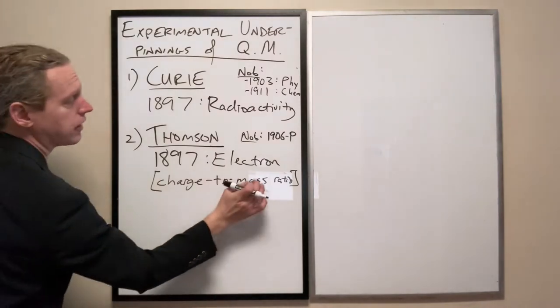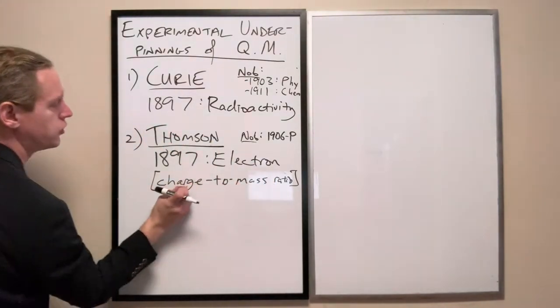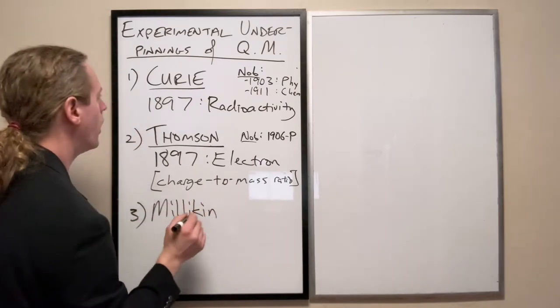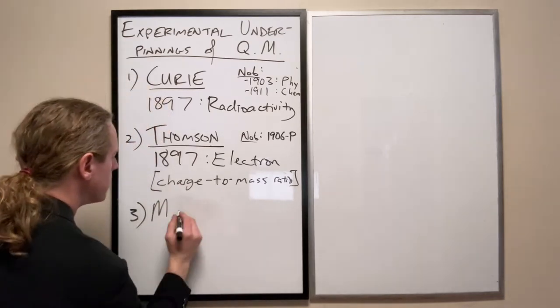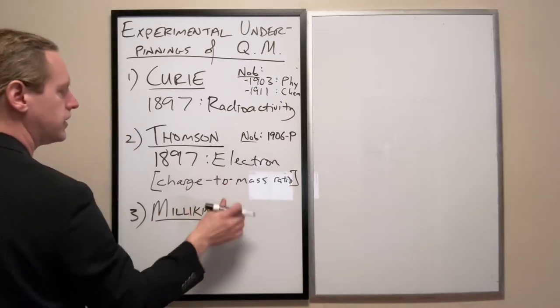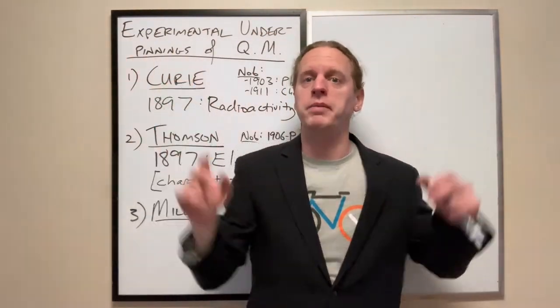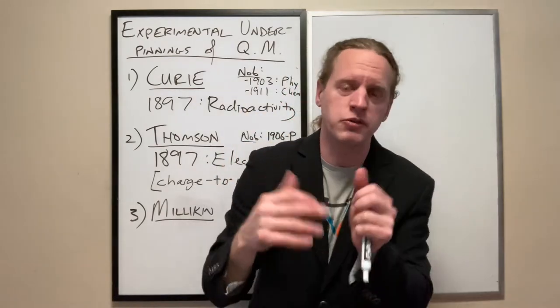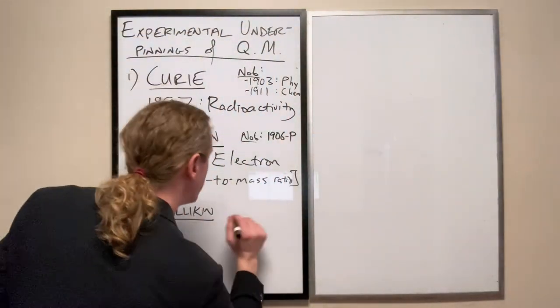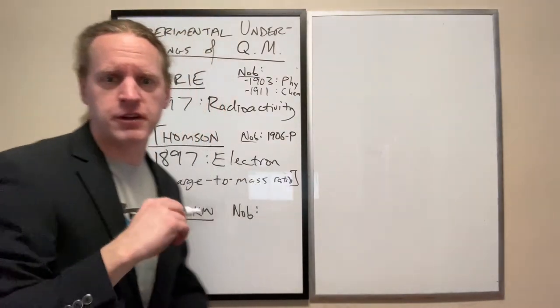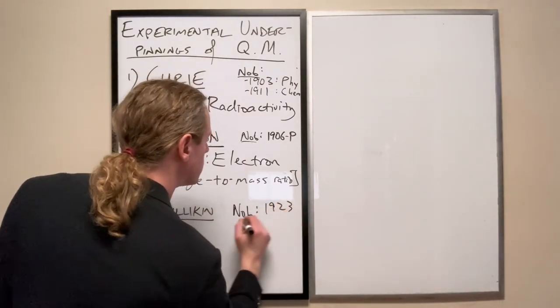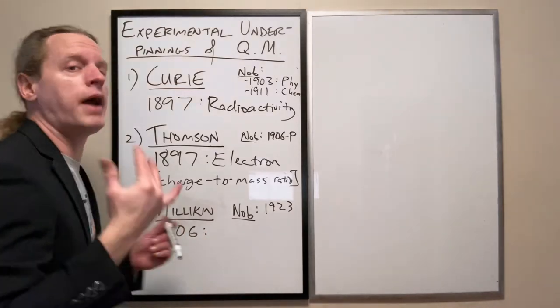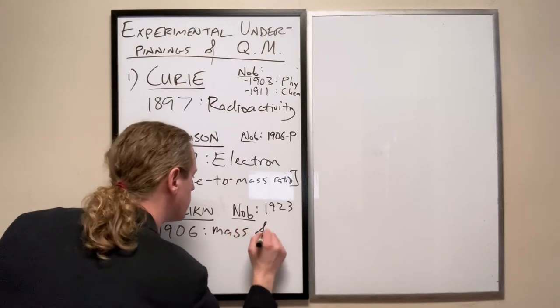After Thompson measured specifically the charge to mass ratio, that basically how many kilograms per coulomb of charge the electron has, then that's when the next person here came along. And this was Millikan. And you always hear him in the context of the Millikan oil drop experiment. And because literally what he did is he made droplets of oil that had static charge contained in them. And he measured how much charge each one had. But so Millikan won his Nobel in physics in 1923.